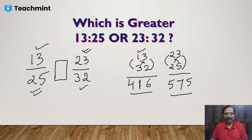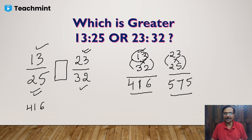I took up the numerator 13, so I write the product 416 below 13. And since I multiplied 23 with 25, I write the product 575 below 23. You can clearly see that 575 is greater than 416, and therefore 23 upon 32 is greater than 13 upon 25.